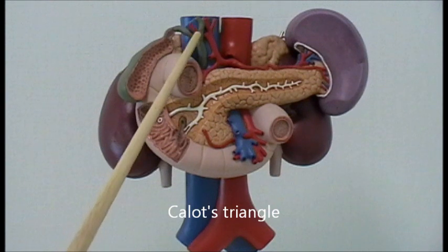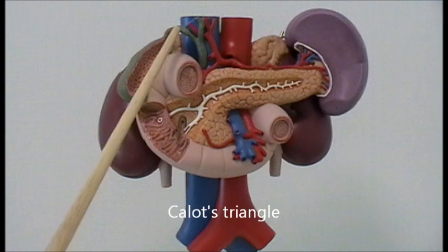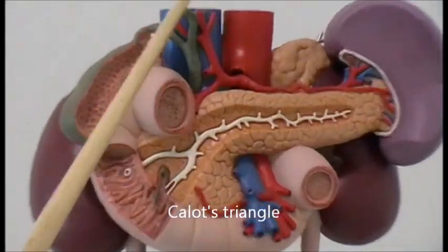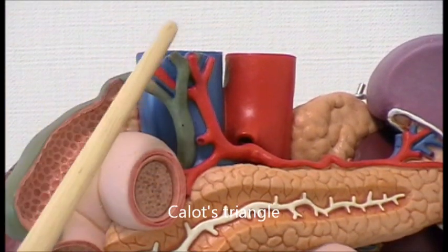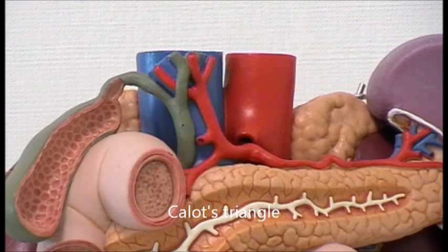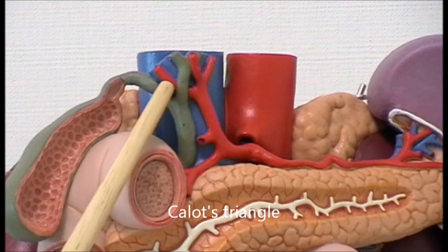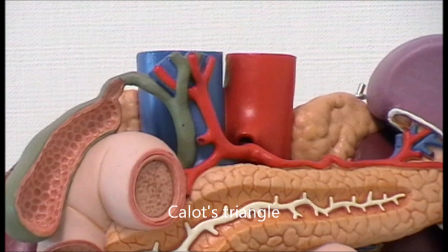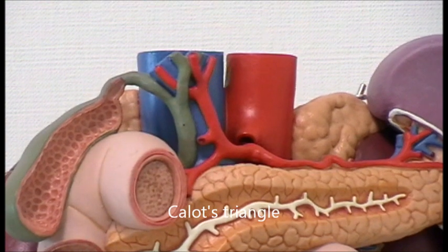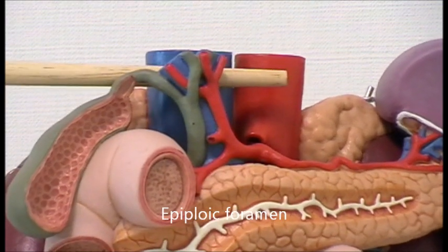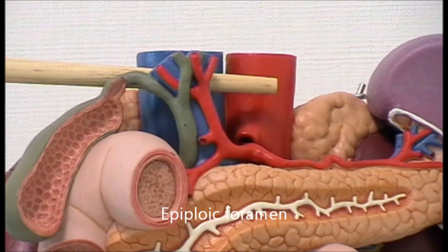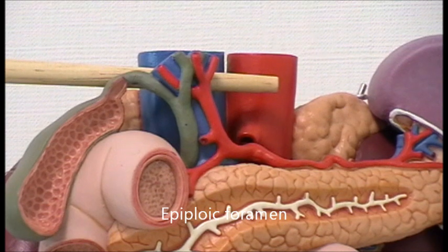This is the region of Calot's triangle. It is formed by the cystic duct, the common hepatic duct, and superiorly the inferior border of the liver. The importance of this triangle is that it contains the cystic artery — here is the cystic artery within this triangle. The triangle also contains a lymph node in addition to the cystic artery. The space behind the portal triad, where the portal triad is separated from the inferior vena cava, represents the epiploic foramen — the foramen that communicates between the lesser sac and the greater sac of peritoneum.